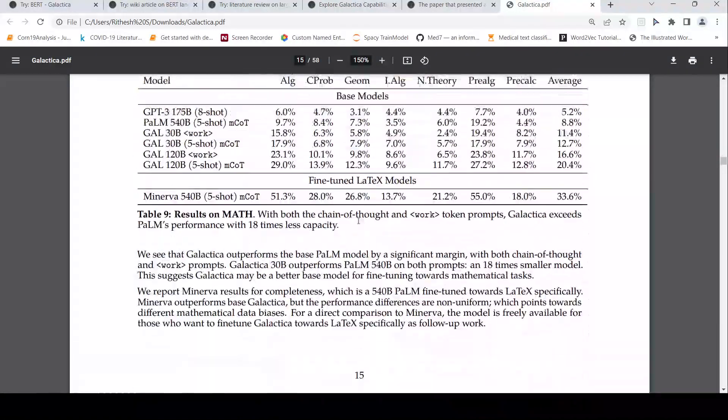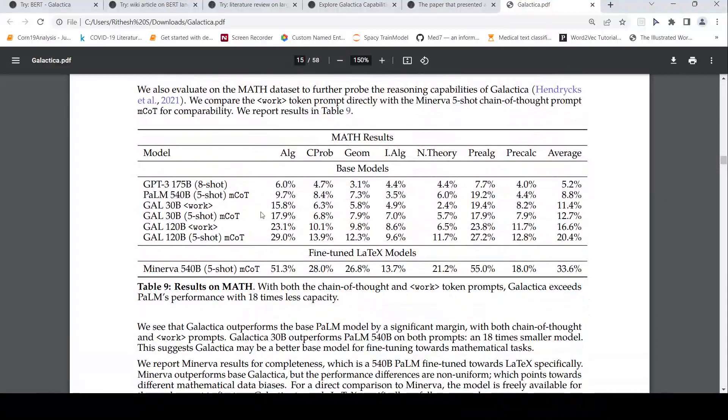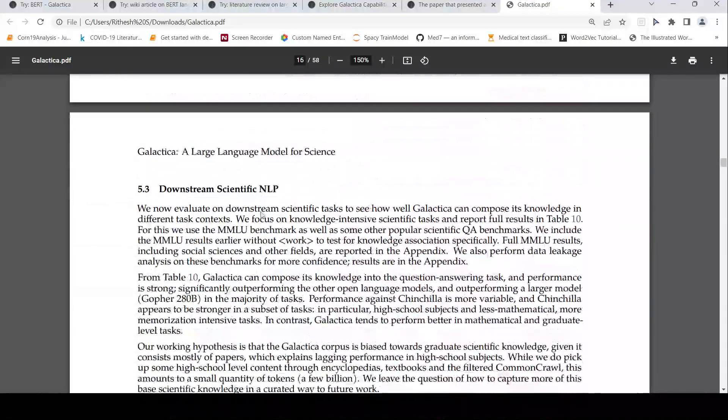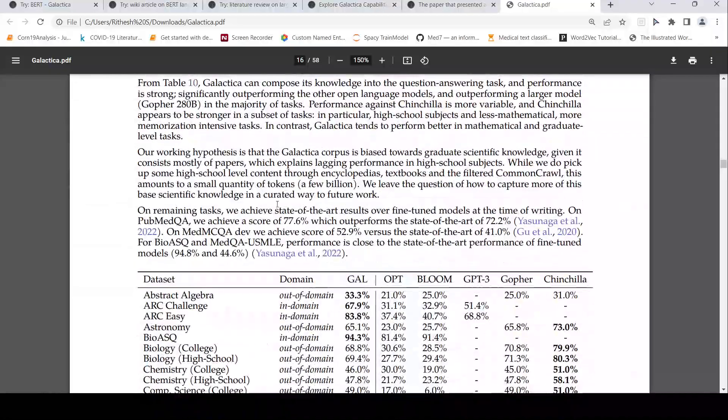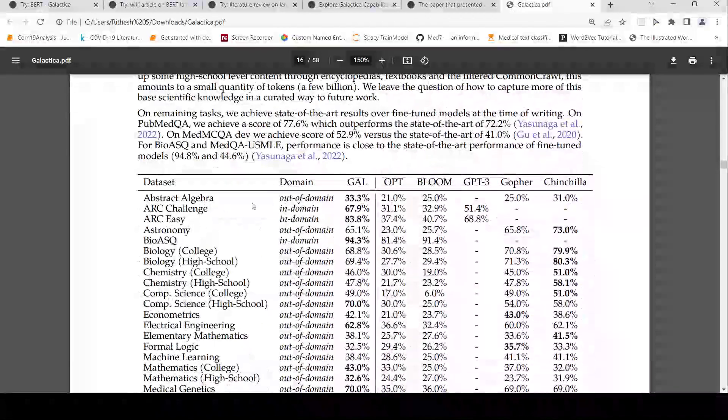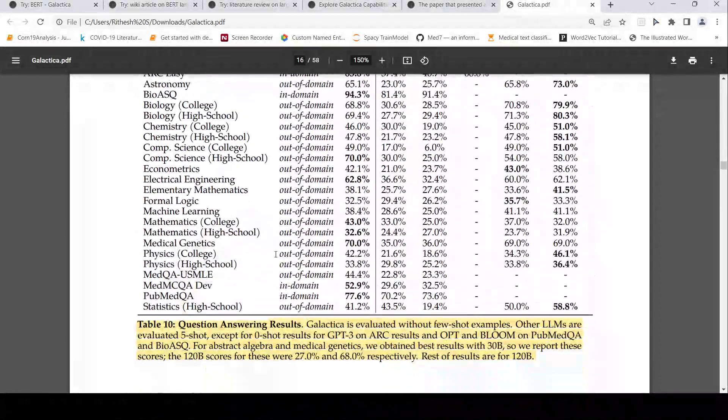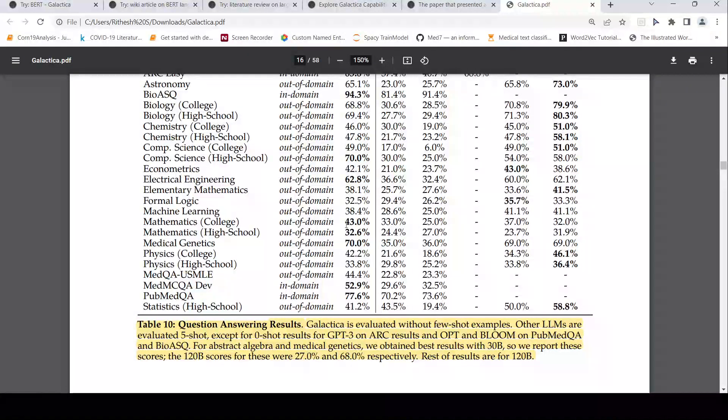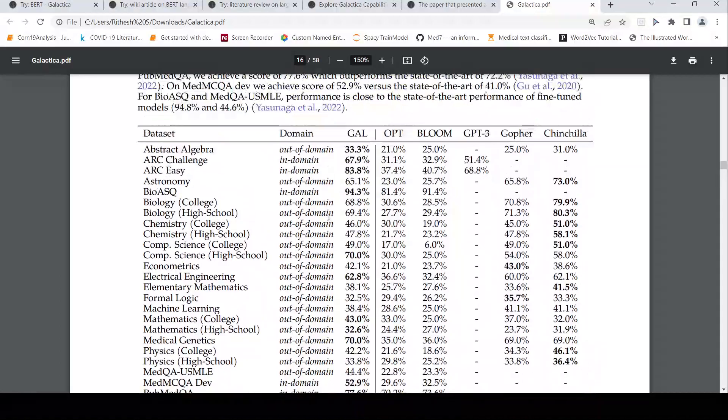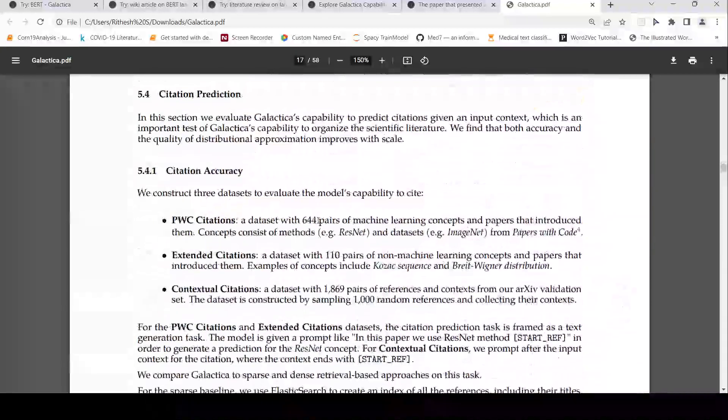Then we have reasoning which is basically mathematical reasoning, where they say that this performs better than PaLM or GPT-3. Then they also have scientific NLP question answering basically on different data sets. They have tested it over here and they say the results are much better than other language models. Other language models are evaluated 5-shot except for GPT-3 on some, on OPT and Bloom on PubMed QA and BioASQ. So here they say that it performs better for the exact numbers you can refer to the paper.